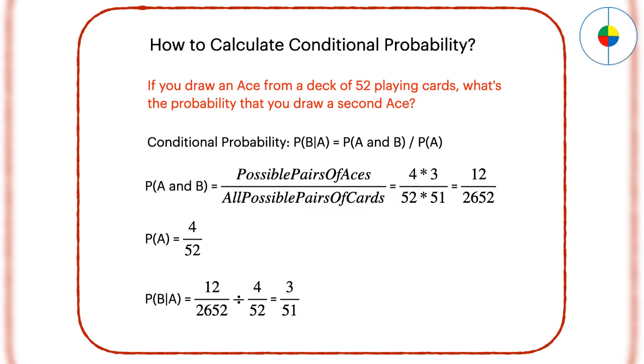To calculate the conditional probability, the event should be dependent on other events. For example, you draw a card from a poker deck. Then, if you draw another card, the probability of the second card will be different from the first card. Here is the formula.